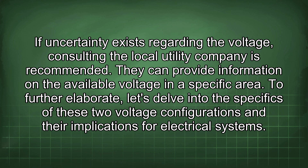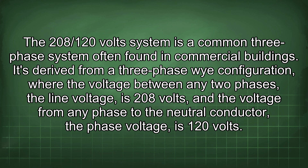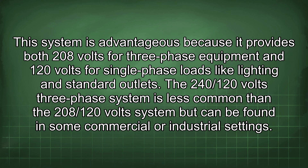The 208/120-volt system is a common three-phase system often found in commercial buildings. It's derived from a three-phase Y configuration, where the line voltage — between any two phases — is 208 volts, and the phase voltage — from any phase to the neutral conductor — is 120 volts. This system is advantageous because it provides both 208 volts for three-phase equipment and 120 volts for single-phase loads like lighting and standard outlets.